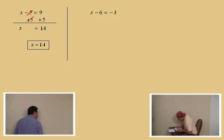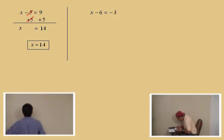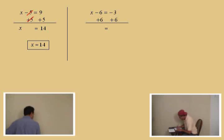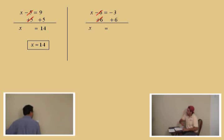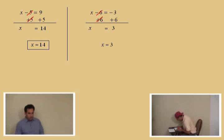Another one: x minus six equals negative three. Charlie, what do we do to both sides of this equation? Add six. We add six to both sides, trying to get x by itself. We bring down the bar and equal sign — the sixes cancel out — and we get x on the left. On the right, negative three plus six is three. So x equals three.